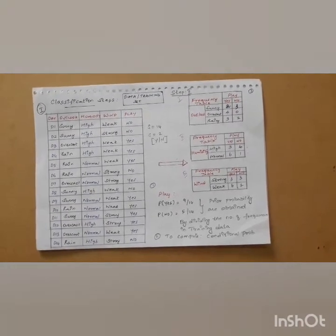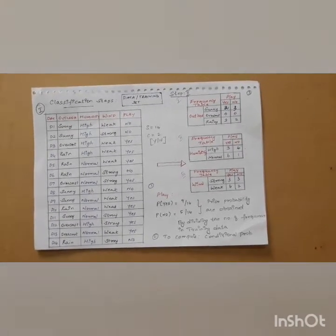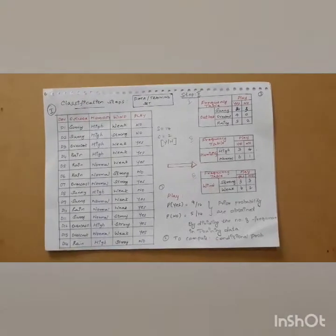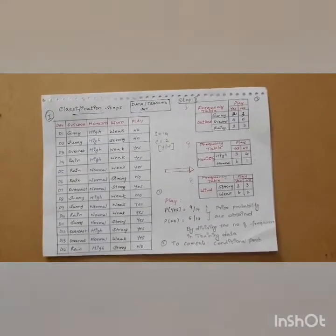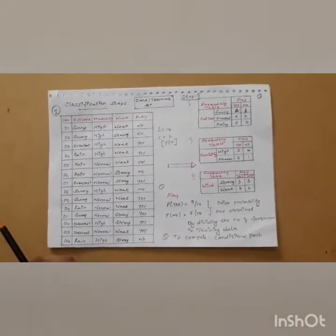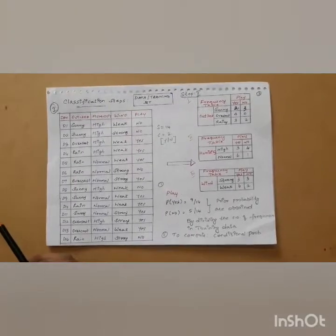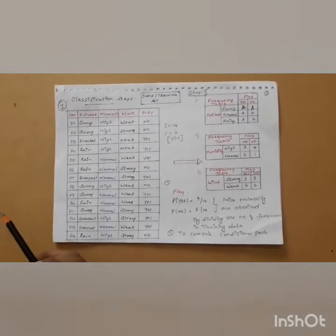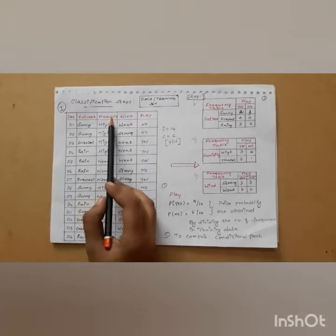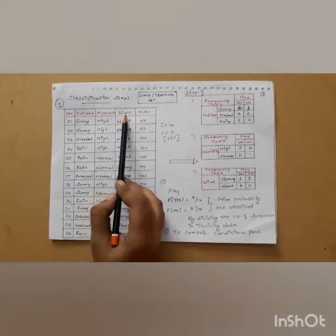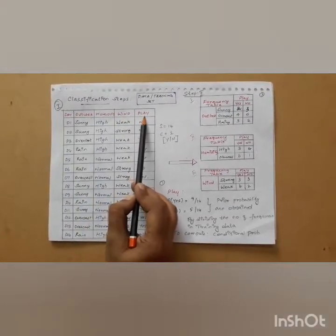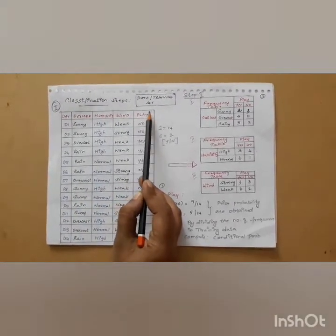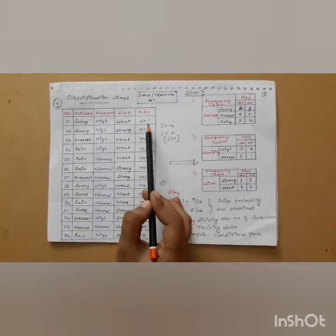Consider an example for predicting a class label using the Naive Bayes classification. The training set for deciding whether to play is given. The data tuples are described by the attributes called outlook, humidity, and wind. The class label attribute has two distinct values: yes or no.